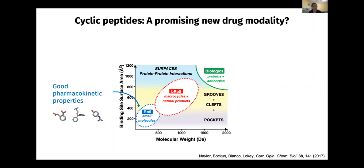The Rule of 5 means that drug companies like Pfizer and Merck have developed a set of rules that can make small molecule drugs orally bioavailable. Typically, the molecular weight is going to be smaller than 500 Daltons, and so you see all these small organic molecules.